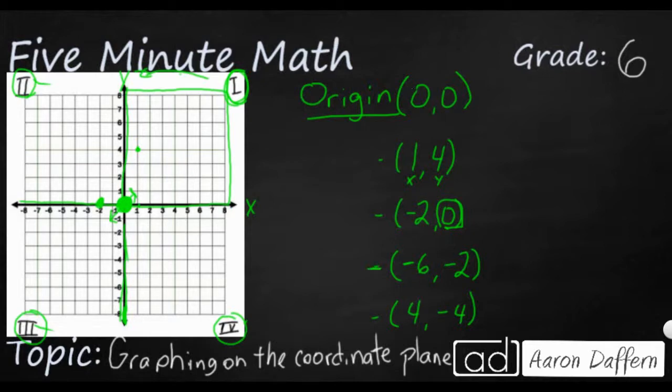Our third one here is going to be in quadrant 3. Look at that, (-6, -2). If they're both negative, that's going to be quadrant 3. So -6 is all the way over here, and now I've got to go down 2, -1, -2. So I'm going to put a big green dot right here on (-6, -2).